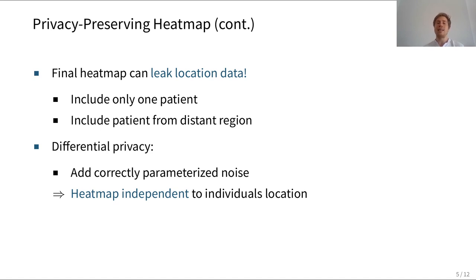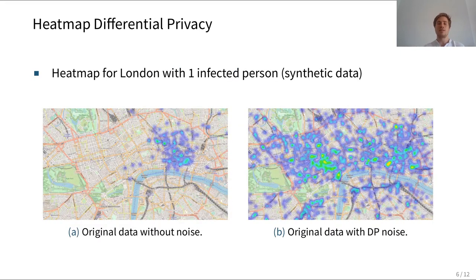However, this protocol has another problem: once the client decrypts the heat map, the heat map itself can still leak location data. For example, if the query consists of only one patient, or two patients from completely different regions, their location profiles are clearly visible on the final heat map. We propose to protect against this inherent leakage by using differential privacy, which works by adding correctly parameterized noise to the output. This achieves statistical independence between the heat map and any individual's contribution. For example, here on the left we have a heat map for London including only one person — you can clearly see that individual's location profile. On the right, after applying differential privacy, the location data is drowned in noise and the individual's profile is no longer visible.